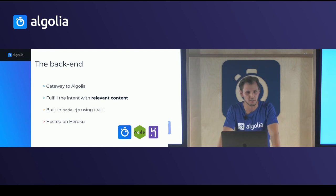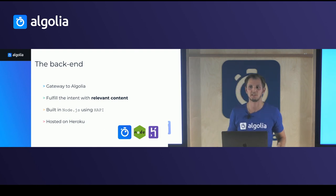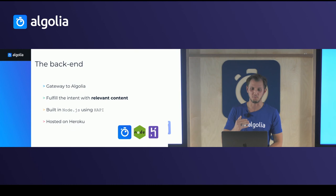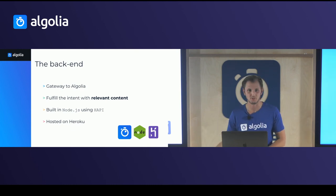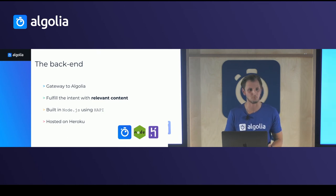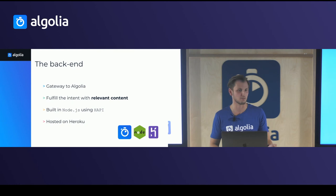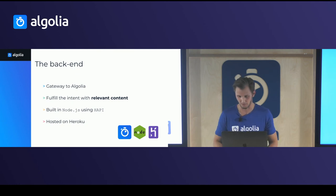The backend is the easy part — it's just a gateway to Algolia. Dialogflow calls this backend with the extracted entities, the backend makes a request to Algolia, gets the results back, ships them to Dialogflow, and they get returned to the app. It was built with Node.js and Hapi, a framework for building APIs, and it's hosted on Heroku.